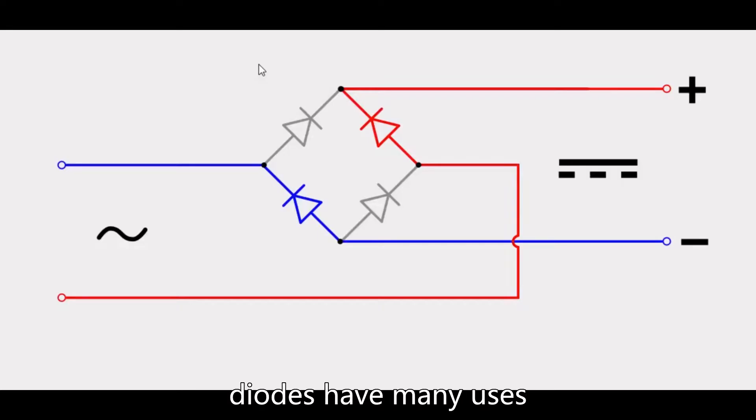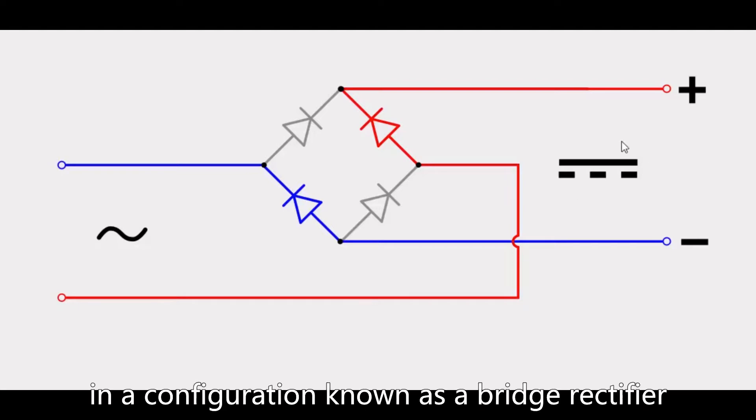Diodes have many uses. One of the most common uses of the diode is in the rectification of AC to DC in a configuration known as a bridge rectifier.